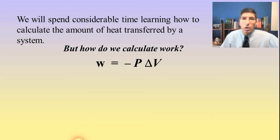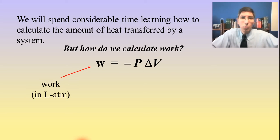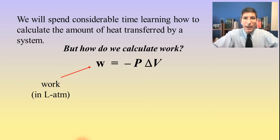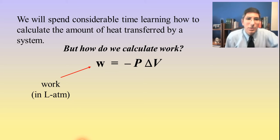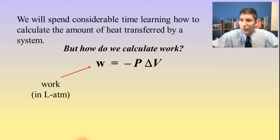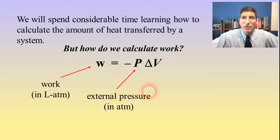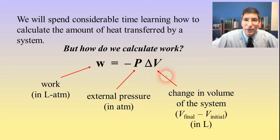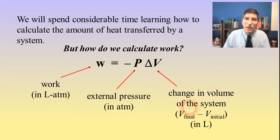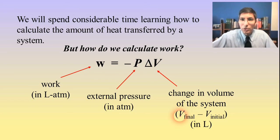There's an equation for that: work equals negative P times delta V. W stands for work, and it will likely be given in liter-atmospheres. P is the external pressure outside the system, normally given in atmospheres. Delta V is the change in volume of the system — that's really how work takes place in this course. You find delta V as final volume minus initial volume, in liters.